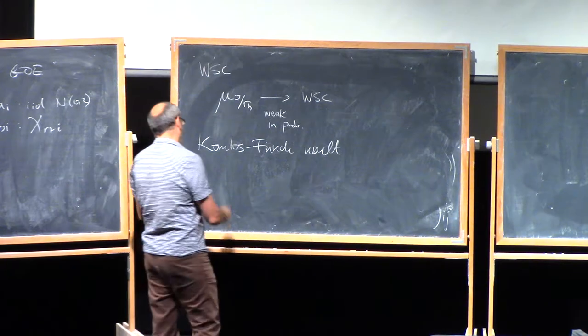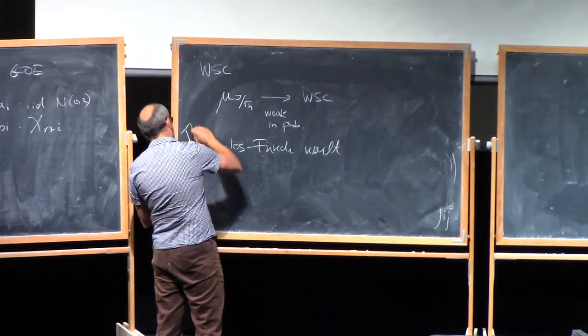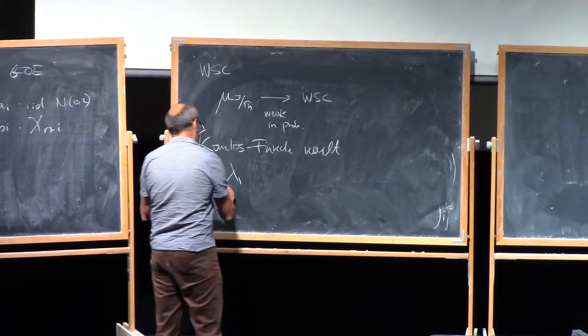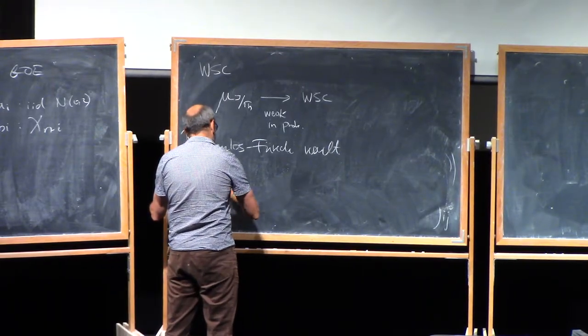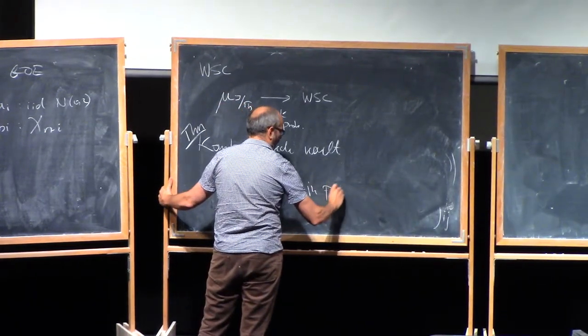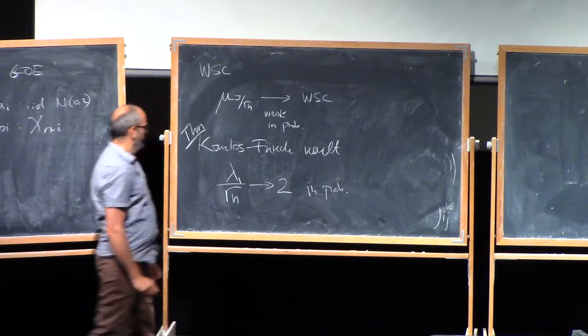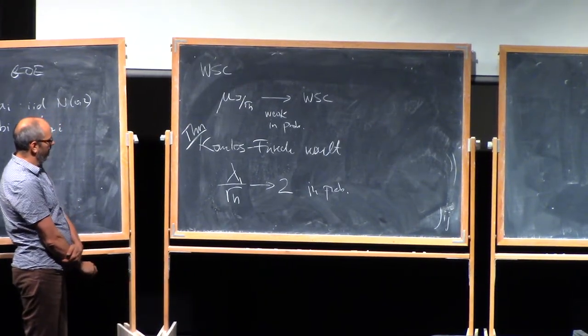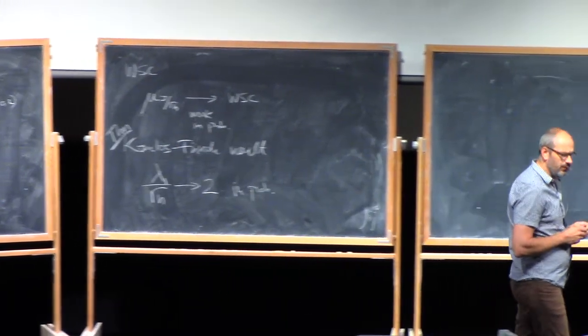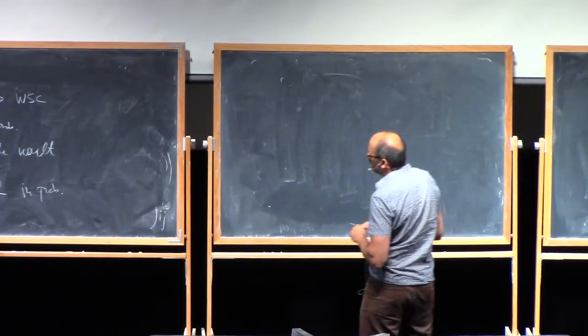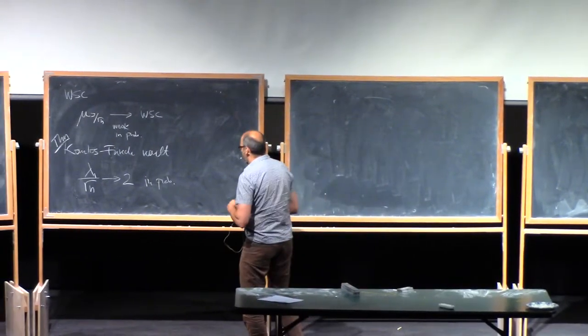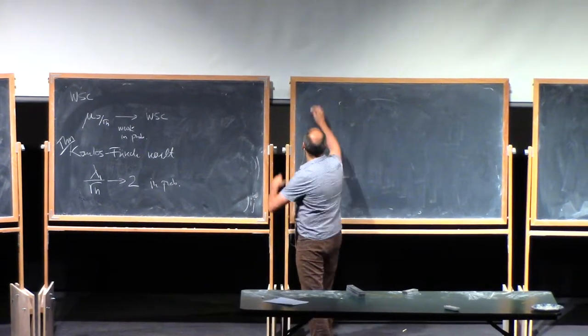And we actually want to show that if you look at the top eigenvalue, we call it Lambda 1, and you divide this by square root of n, and actually this converges to 2 in probability. So, in fact, this is going to be fairly short.